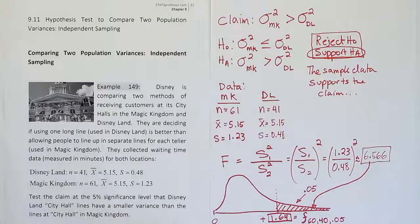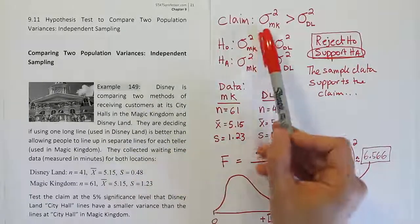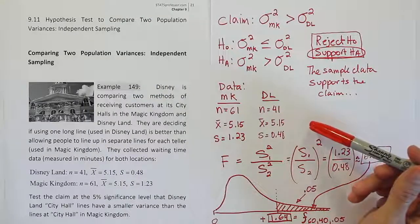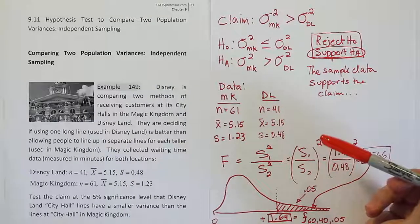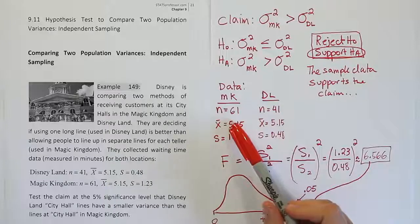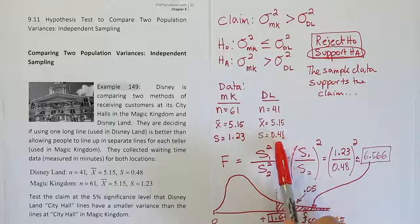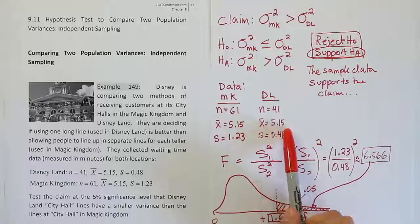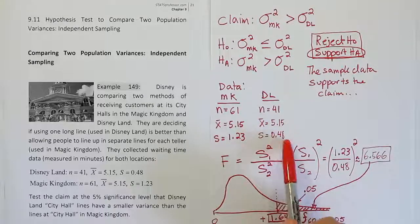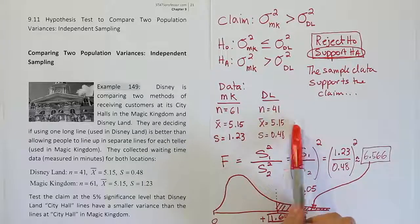So what does that mean in this problem? It means there's a smaller variance at Disneyland than there is at the Magic Kingdom. Disneyland uses one long line, and everyone waits in the long line, then when the teller becomes open, they go to the teller. That has a smaller variation. So what does that mean in practical terms? Since on average both types of lines produce the same average wait time, then smaller standard deviation is better. What that means is you have a more consistent experience. When Disneyland says it's about a five minute wait, they're about right because the standard deviation is quite small. That means there will only be a slight variation around that. Maybe a minute on either side.